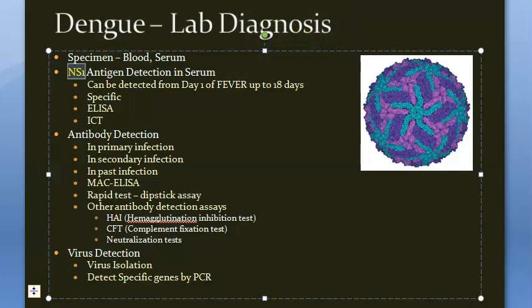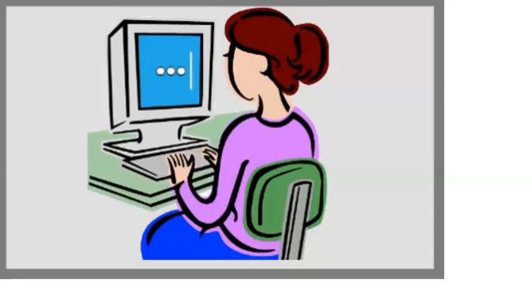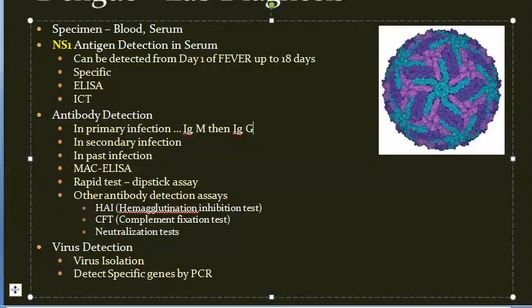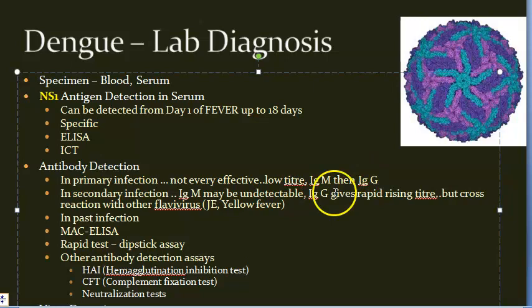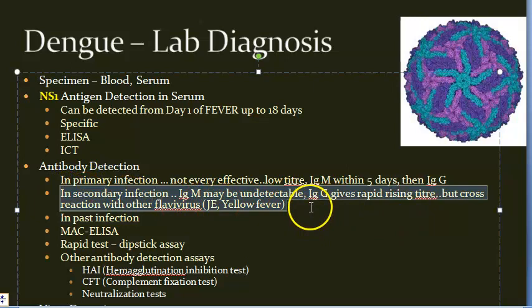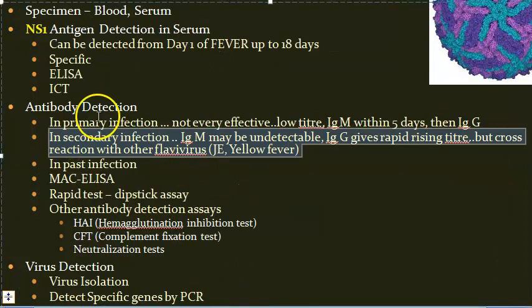Moving on to antibody detection. In primary infections, antibodies are slow and give low titer — so it is not very effective. IgM appears within five days, followed by IgG. In secondary infection, IgM may be undetectable, but IgG gives a rapid rising titer.